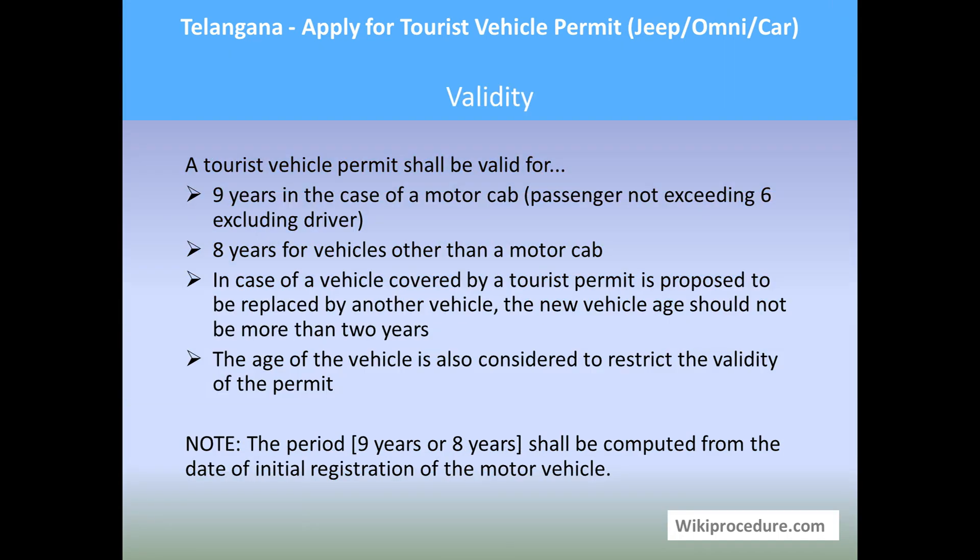A tourist vehicle permit shall be valid for nine years in the case of a motor cab with passengers not exceeding six (excluding driver), and eight years for vehicles other than a motor cab. In case a vehicle covered by a tourist permit is proposed to be replaced — due to accident or sale — the new vehicle's age should not be more than two years. The age of the vehicle is also considered to restrict the validity of the permit.